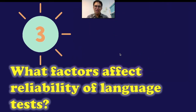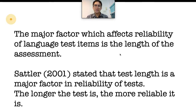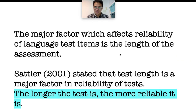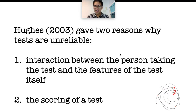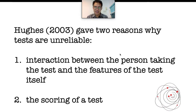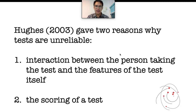Number three: What factors affect reliability of language tests? The major factor which affects reliability of test items is the length of the assessment. According to Settler (2001), she stated that test length is a major factor in reliability of a test. She mentioned that the longer the test is, the more reliable it is. News (2003) also gave two reasons why tests are unreliable: the interaction between the person taking the test and the features of the test itself, and the scoring of a test.